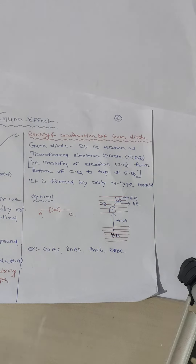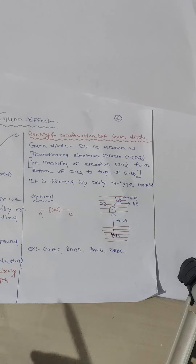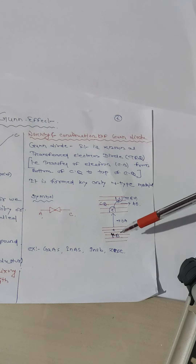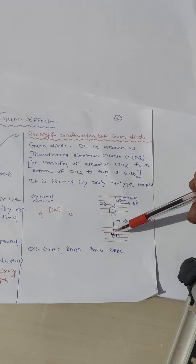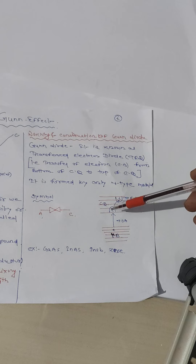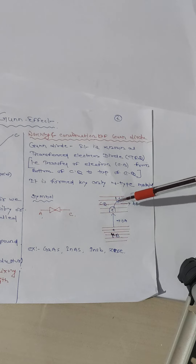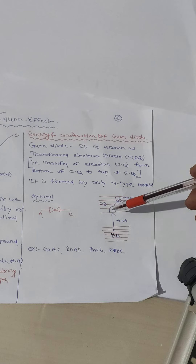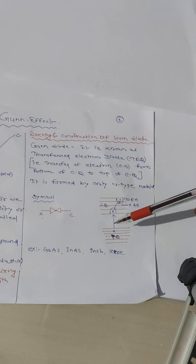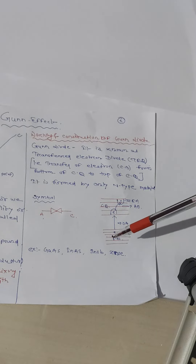To understand the Gunn effect, we need to understand the Gunn diode, also known as the transferred electron diode. This means electrons are transferred from one conduction band to another conduction band. It is formed using only n-type material. In the energy band diagram, we have the valence band, the lower conduction band, and a third band called the satellite band. When energy is provided, electrons move from the valence band to the conduction band.